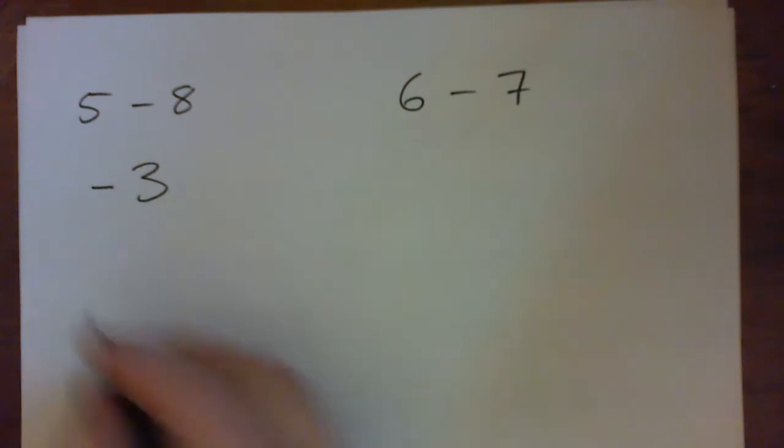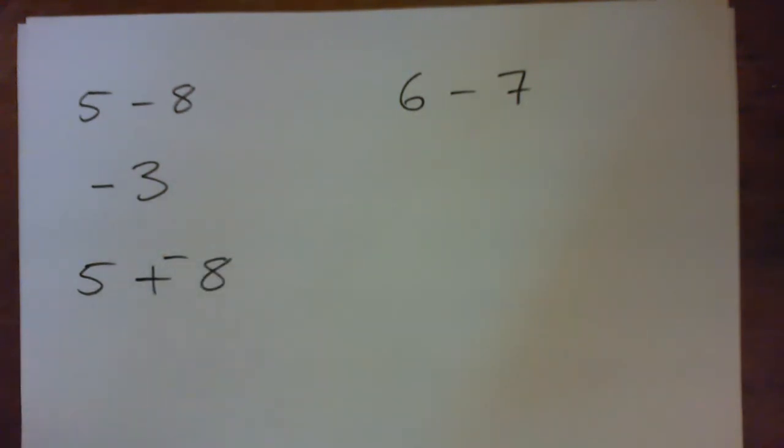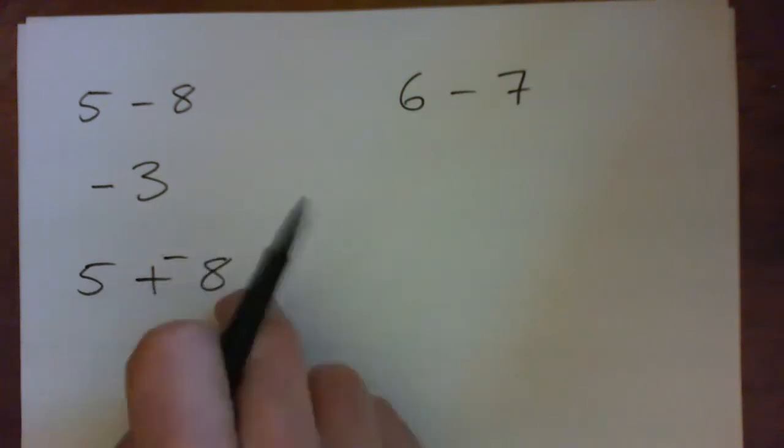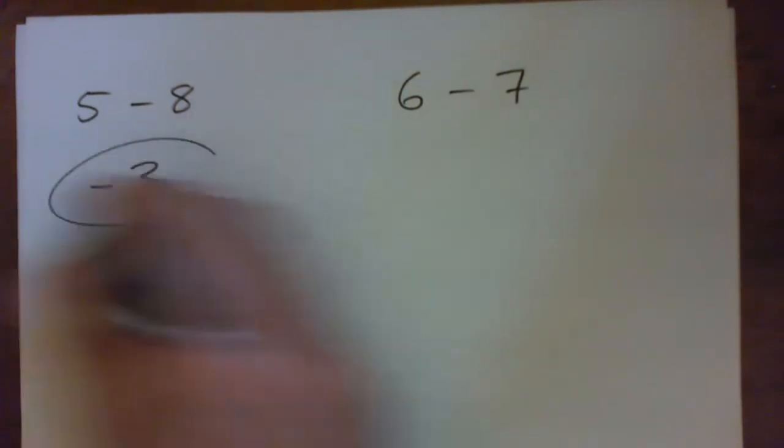For fun, you can also do the blam blam, like take that subtract sign and go blam blam, and that's 5 plus negative 8. 5 good guys combined with 8 bad guys makes 3 bad guys.